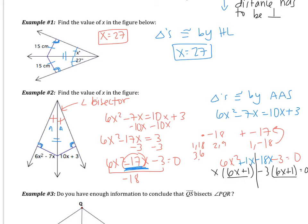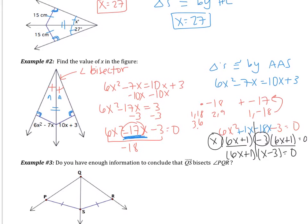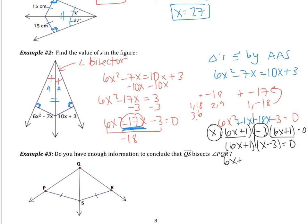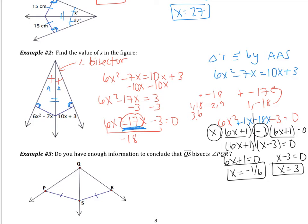Remember that these parentheses should match. That becomes the first factor, and the second factor is the numbers outside: x − 3. Setting both parts equal to zero, I get x = −1/6 and x = 3. Both of those will work — if you substitute both in, you get positive answers, so we have two different answers. What I'm most concerned about is that you can set up the problem. If you don't remember the factoring, that's okay — we'll do more of that in class.